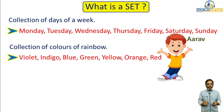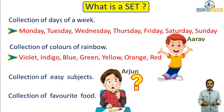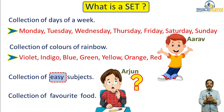Now let me ask you two more questions: the collection of easy subjects, and the collection of your favorite food. Most of you must be slightly confused about this. When I ask about easy subjects, what do you mean by 'easy'? For Arav, maths is easy; for Arjun, science is easy; for some other student, history or geography is easy. So 'collection of easy subjects' is a very subjective question — the answer changes from person to person.